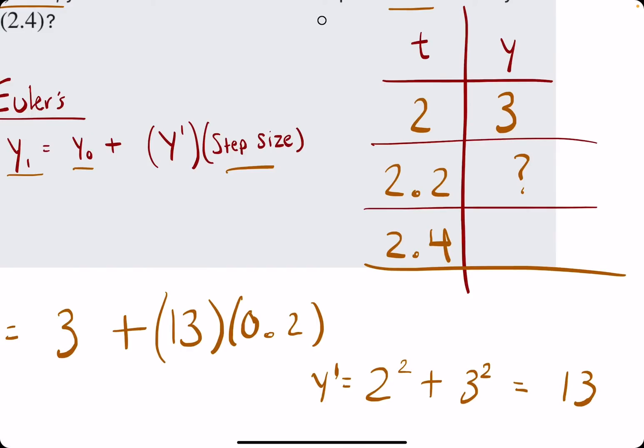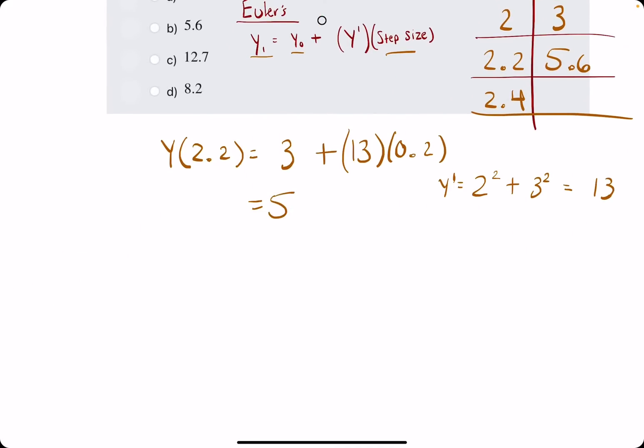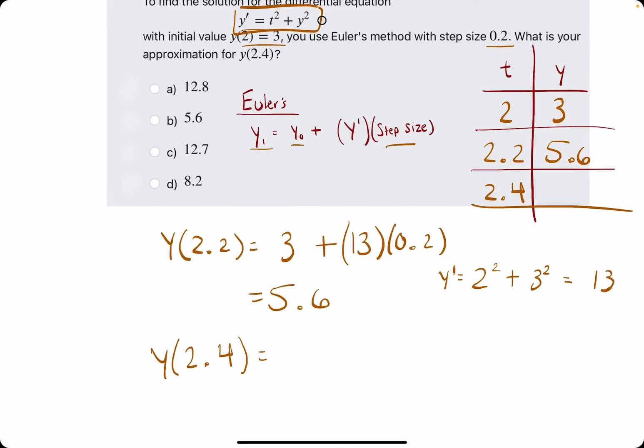So now 5.6 is our result for this one, and so we will use that to approximate the next y value for 2.4. So 5.6 becomes our y0, our previous y value.